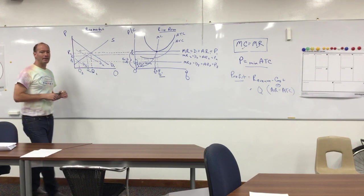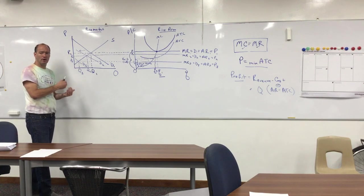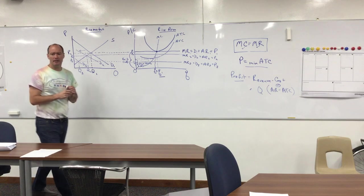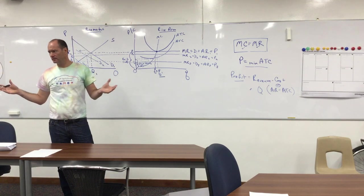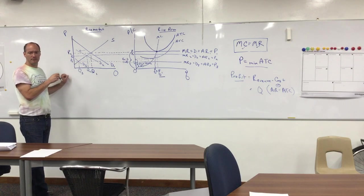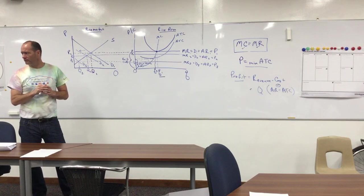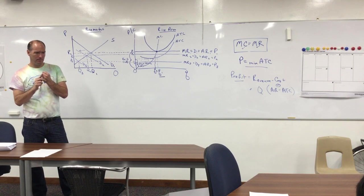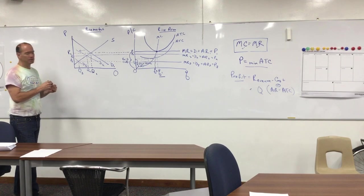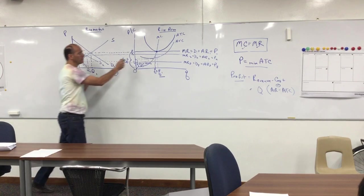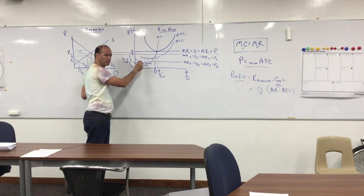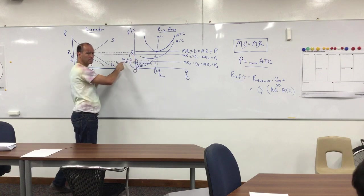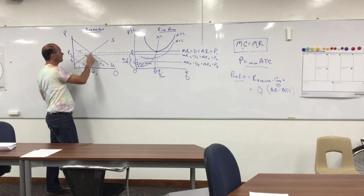For our purposes we're assuming all rice is identical. Because there are many sellers and the product is identical, the firms in this market have no power to control price — they have no market power or monopoly power. Therefore they are price takers: the price is established in the market, and the firms have to charge that price. They can't charge higher or they lose all their sales; they can't charge lower and still make a profit.